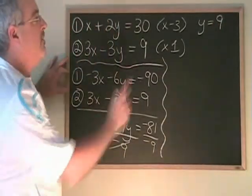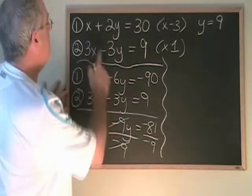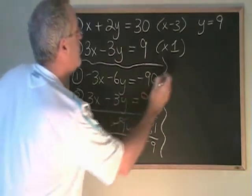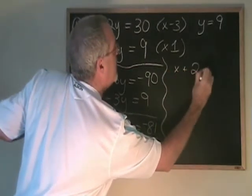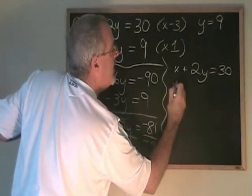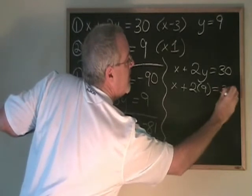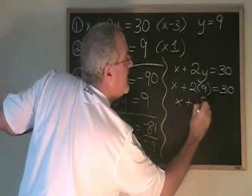Now we're going to plug y equals positive 9 into one of the original equations and see what we get for our x. I'll use equation 1. x plus 2y equals 30. If y is 9, x plus 2 times 9 equals 30. x plus 18 equals 30.